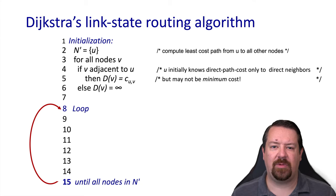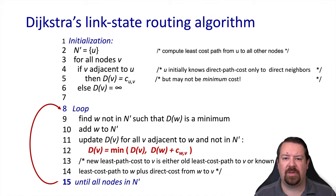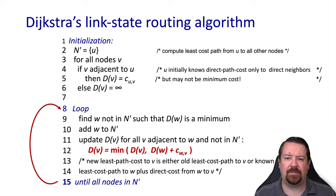That initializes our variables, and then we iterate in a loop until we've found the lowest cost to get to each destination. First, we look through all the destination nodes that aren't currently in n' and find the one that has the lowest path cost. We then add that node w to n', and we look at all the neighbors of w that are not already in n' and update our cost to those destinations if it's lower than what we already have. If the cost already recorded in d is lower than the new cost, we keep our existing cost. We keep doing that loop until all of our nodes are in n'.